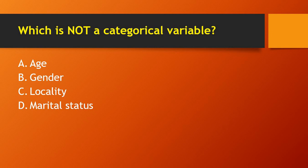Next question: which is not a categorical variable — age, gender, locality, or marital status? Gender, locality, and marital status are all categorical variables. The one option left is age, so age is not a categorical variable.